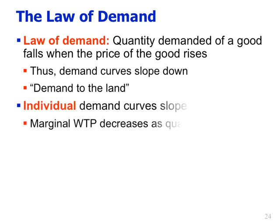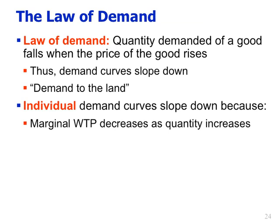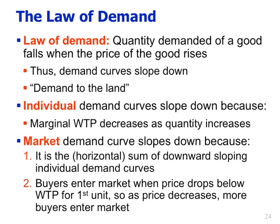Individual demand curves slope down because marginal willingness to pay decreases as quantity increases — the additional benefit you get from the 21st apple or the 8th TV in your house is not the same as you got from the first. Because your value of additional units goes down as you consume more, individual demand curves slope down. Market demand curves slope down first because they are the horizontal sum of downward-sloping individual demand curves.